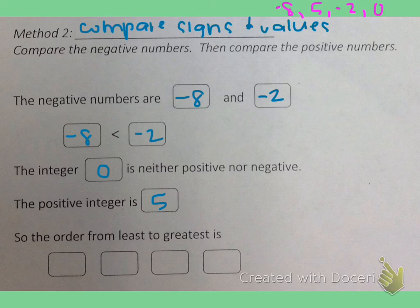So if we were going to order them from least to greatest using this method, we would still get the same answer, negative 8, negative 2, 0, and 5.